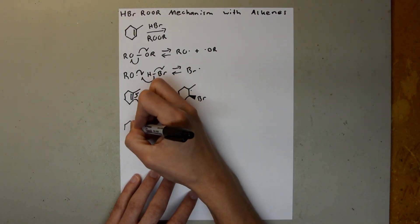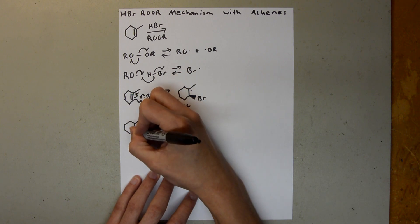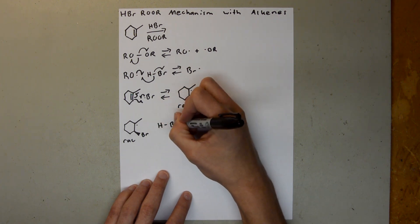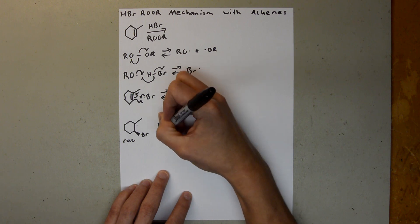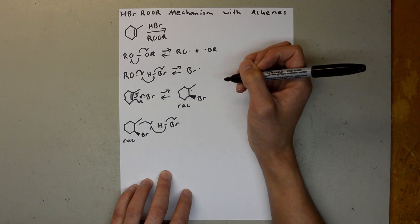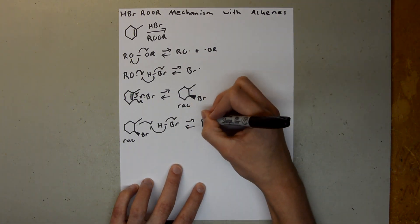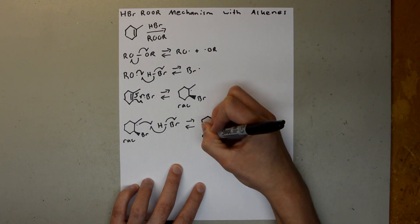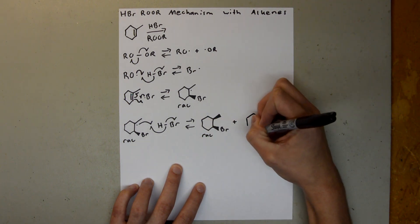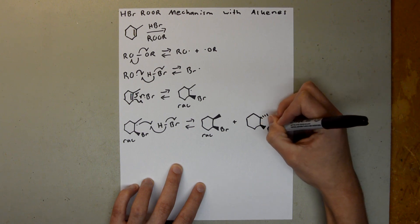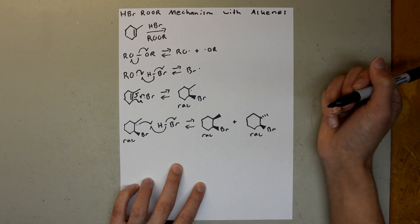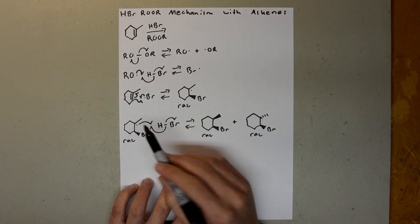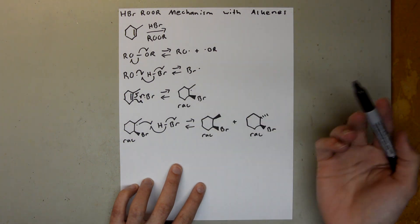So then this racemic mixture is going to react with another HBr. And again, one electron is going to go to the bromine, and then one is going to come up here and combine with this electron. And then that's going to form this racemic mixture of diastereomers. Again, we have no stereochemical control of how this hydrogen adds right here, so it can go either on top of the methyl group or below it, so you can form either a wedge or a dash here.